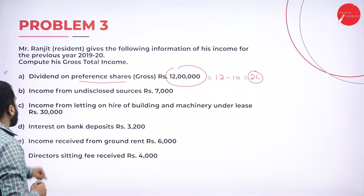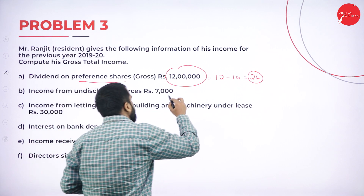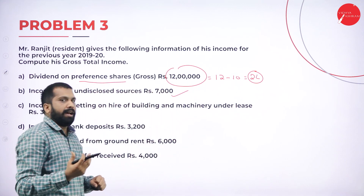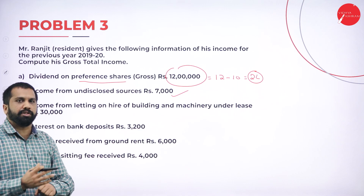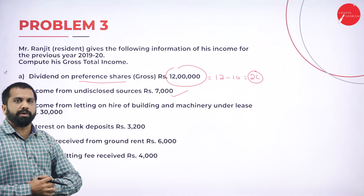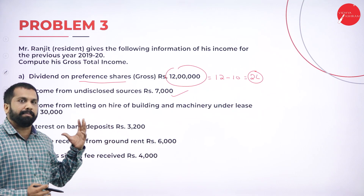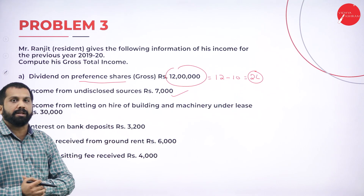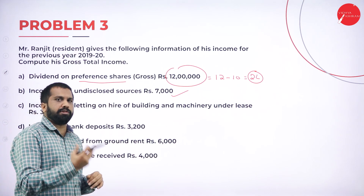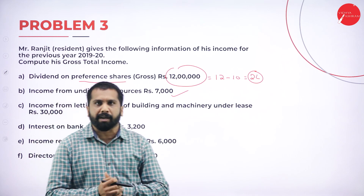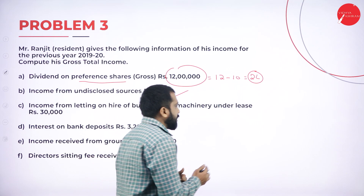Income from undisclosed sources is fully taxable. Undisclosed means you cannot disclose the source — you have no proof, no documents for that income. Those are called undisclosed income and are fully taxable. Then there is casual income, which is a five-mark theory topic.